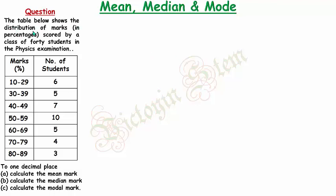The table below shows the distribution of marks in percentages scored by a class of 40 students in the physics examination. Six students scored from 10 to 29 marks, five scored from 30 to 39, seven scored from 40 to 49, ten scored from 50 to 59, five scored 60 to 69, four scored 70 to 79, and three scored 80 to 89. The question asks: to one decimal place, (a) calculate the mean mark, (b) calculate the median mark, and (c) calculate the modal mark.